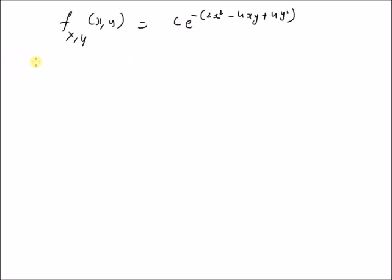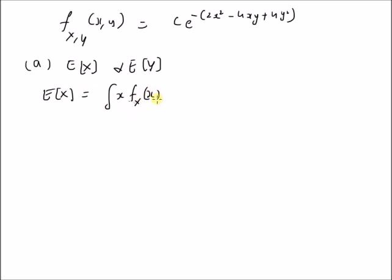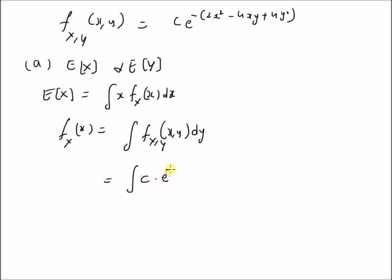The first properties we are interested in are the means of the marginal distributions of x and y. So we want to find expectation of x and expectation of y. Expectation of x is defined as the integral of x times f_x(x) dx. In order to find this expectation, we need to find the marginal PDF of x, which is defined as f_x(x) equal to the integral of f(x,y) dy. Using the given joint PDF, we have the integral of c times e to the power of minus (2x² - 4xy + 4y²) dy, with limits from minus infinity to plus infinity.